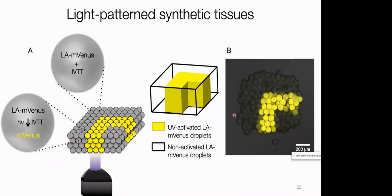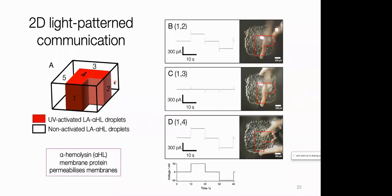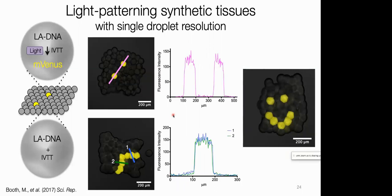From the light side, you can also pattern: a droplet network where all droplets contain light-activated DNA can selectively express along a pathway by illuminating just that region. The same approach works with hemolysin — illuminate a pathway, then the electrode test confirms current only along that pathway, not off-pathway, and because the light penetrates the whole network it works on the top as well. You can pattern single compartments — activate just two single droplets in the network, or a pathway, or a smiley face.